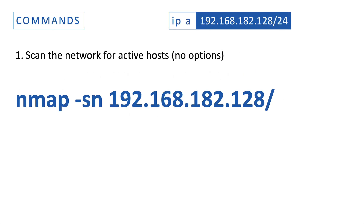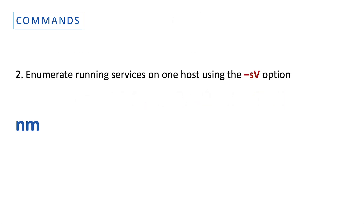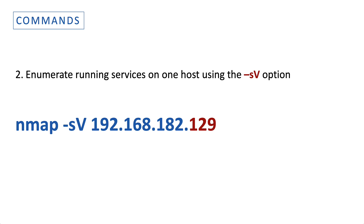Assuming the ip a command gave us a network address, the -sn option would give us a list of active hosts on this Class C network — it's a pretty fast scan. The -sV option takes a lot more time because it enumerates all running services on all known ports, remember the 1000 ports. You can specify a specific port if you want.